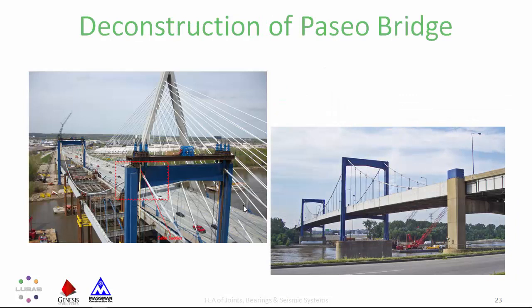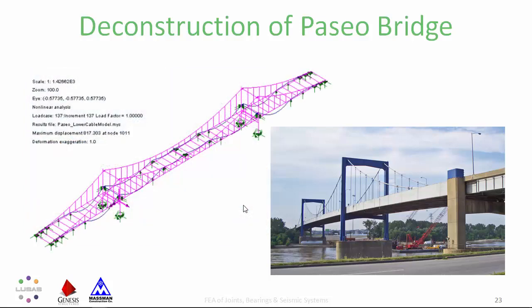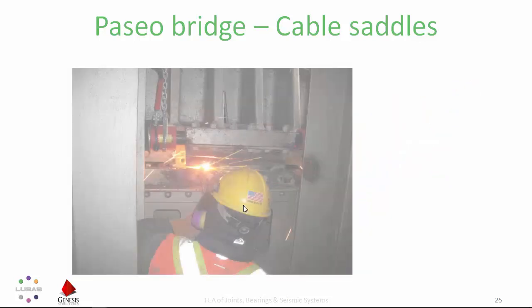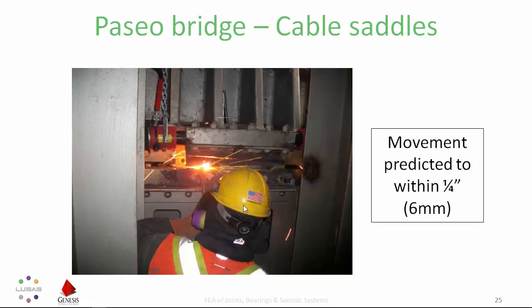Genesis Structures were also employed by Massman Construction to model the surgical deconstruction of the Paseo Self-Anchored Suspension Bridge in Kansas City, Missouri. The cable lowering sequence involved cables being moved in two planes, and the saddles at the tops of the towers had translated 4.5 inches during original construction in 1954, then locked down with steel plates. A loose model of the saddles using joint elements helped predict locked-in stresses and potential movement once the steel plate was cut. The actual movement was as predicted in all saddles within a quarter of an inch, and the bridge was safely dismantled.